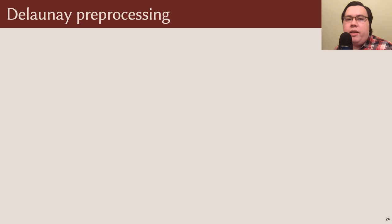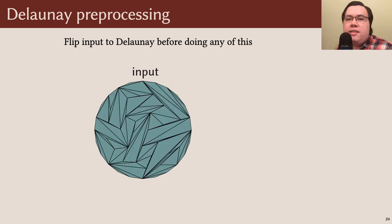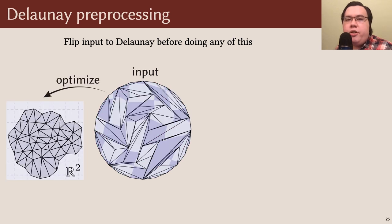One remaining complication with the optimization is that you actually need to flip the input mesh to its intrinsic Delaunay triangulation before doing any of this. As a simple example, consider a flat mesh of the disk. If we directly apply the optimization procedure, it'll actually produce non-zero scale factors which distort the mesh in the plane, even though it started out flat already.